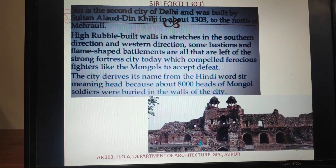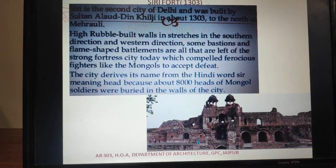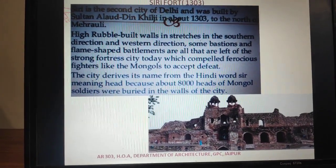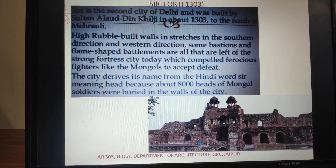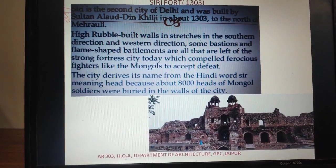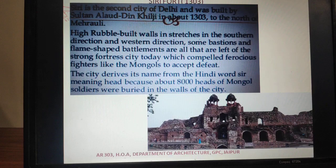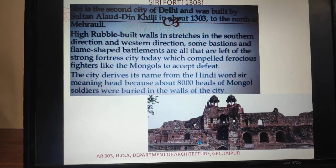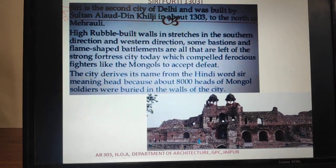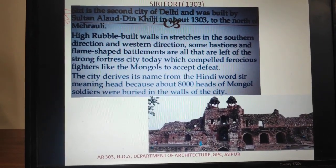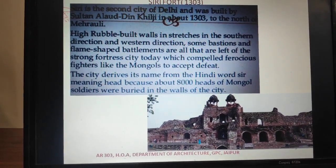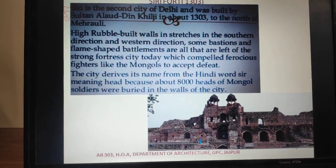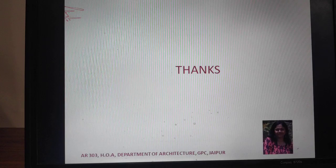In Indo-Islamic architecture, the Khalji dynasty's major contribution is the construction of Alai Darwaza — a very complete, well-proportioned structure. This was about the Khalji dynasty. In the next upcoming videos, we will explain the Tughlaq dynasty. Thank you.